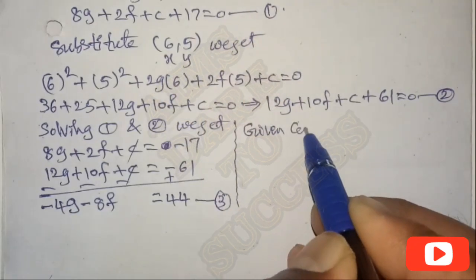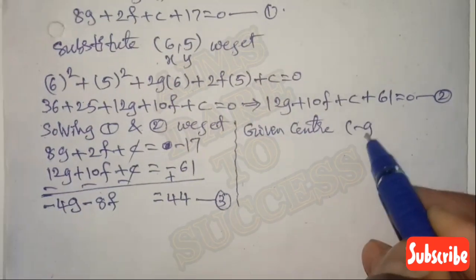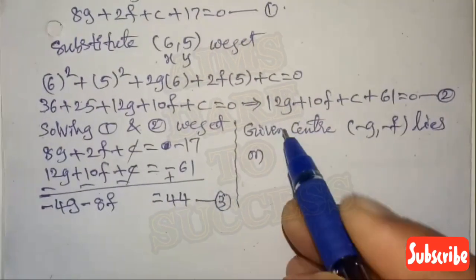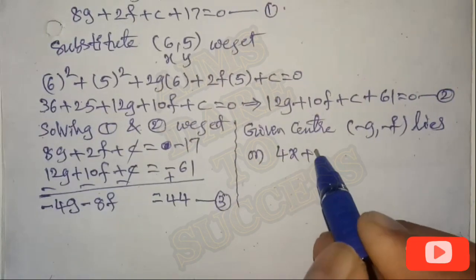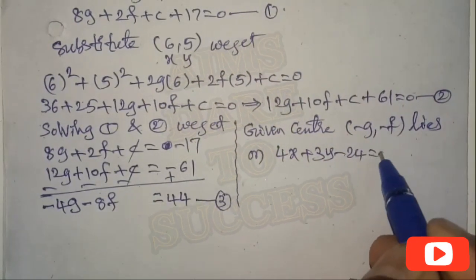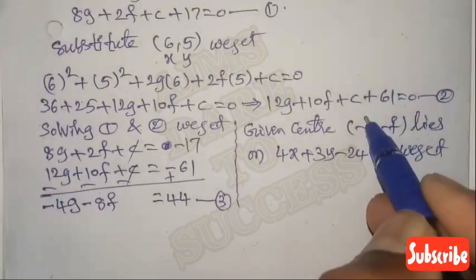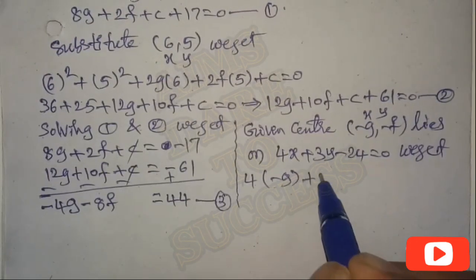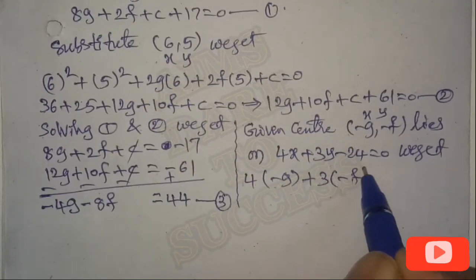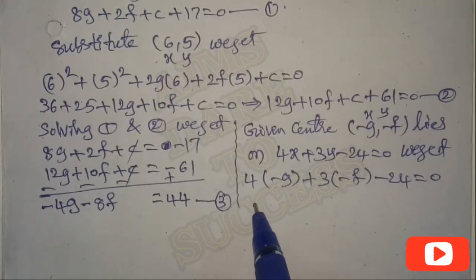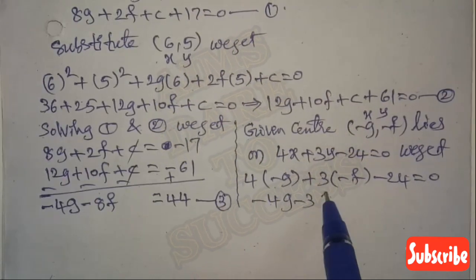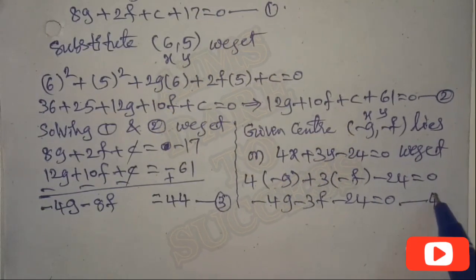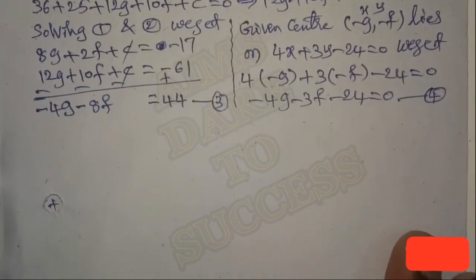According to the question, the center of the circle (-g, -f) lies on the line 4x + 3y - 24 = 0. Substituting x = -g and y = -f: 4(-g) + 3(-f) - 24 = 0, giving -4g - 3f - 24 = 0. Let this be Equation 4.